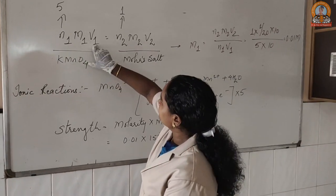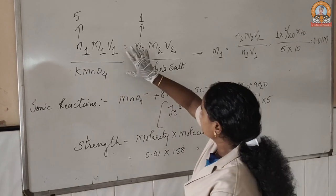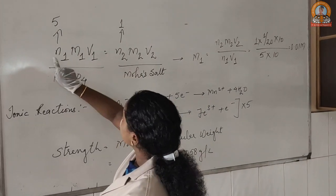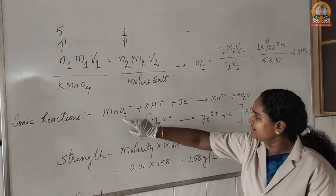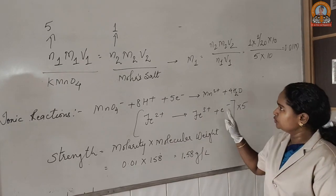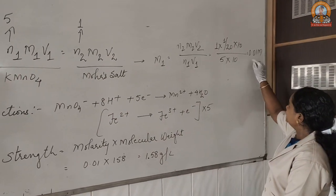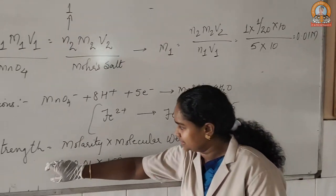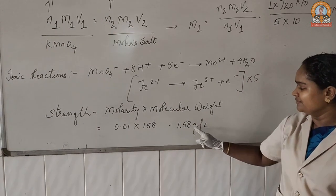We now apply the formula N₁V₁ = N₂V₂, which is actually a normality conversion. Here 5 is the number of electrons gained by KMnO₄ (permanganate ion), and 1 is the number of electrons lost by the ferrous ion of Mohr's salt. On resolving this formula, we get the value 1/100, that is 0.01 molarity. Using that molarity value, strength is calculated as molarity × molecular mass, giving 1.58 grams per litre.